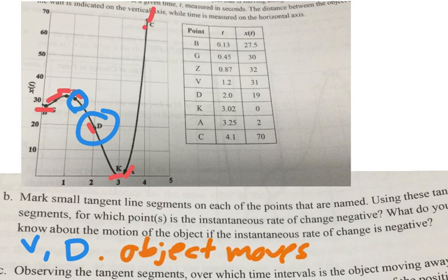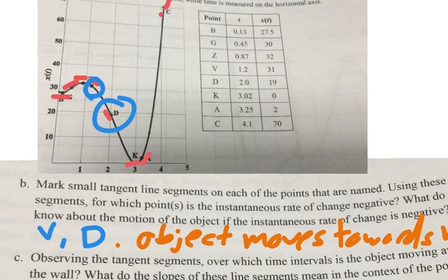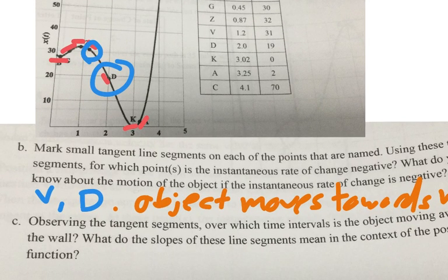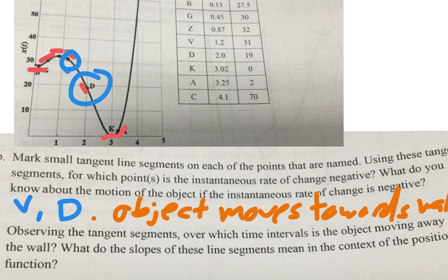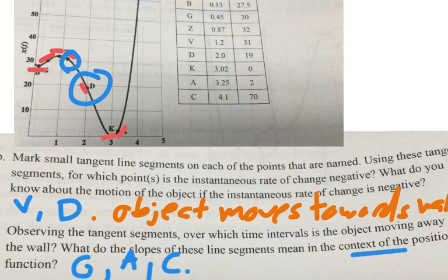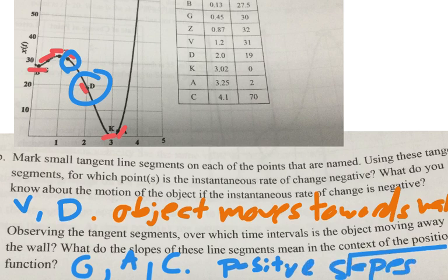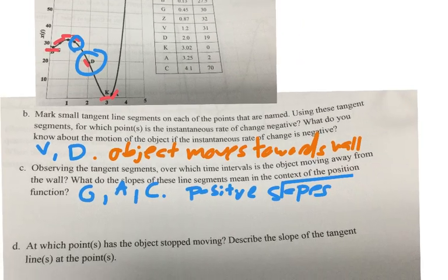Part C, observing the tangent segments, which intervals is the object moving away from the wall? So we're getting farther away from the wall. And then what does this mean in the context of the function? So away from the wall is happening at G, it's happening at A and at C. Those are the positive slopes. So that's the second part of the question. What do the slopes of these mean in the context? We have positive slopes, we're moving away from the wall.